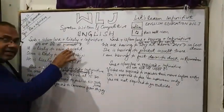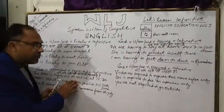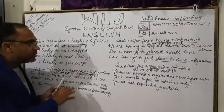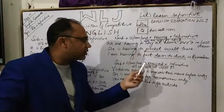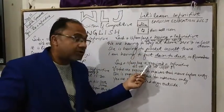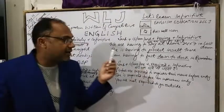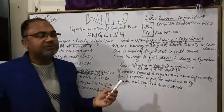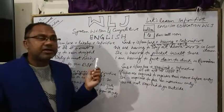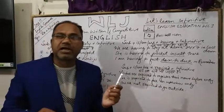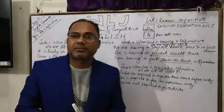In today's class we discussed four structures: 'likely' — there is a possibility of something happening; 'expected' — something is anticipated; 'having to' — something is compulsory or obligatory; 'required to' — something is needed or necessary. All these structures are in the present tense. When we need to frame them in the past, we use 'was/were' in place of 'is/am/are'. Thank you and that's it for today's class. Have a nice day, thank you.